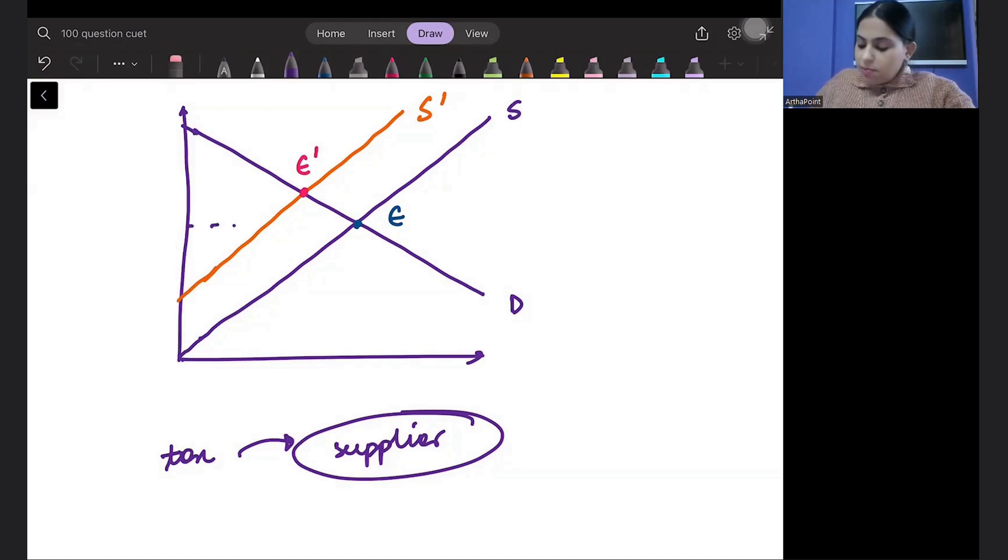Bitta, initially my consumer surplus was A, B, E and producer surplus was B, E, F. Anything below price above the supply curve is producer surplus. Anything above price below the demand curve is consumer surplus. This was my consumer and producer surplus respectively.